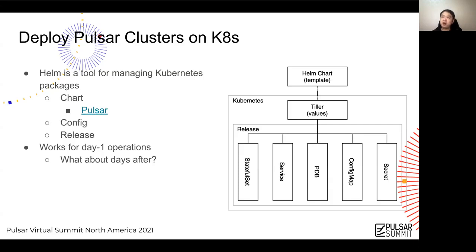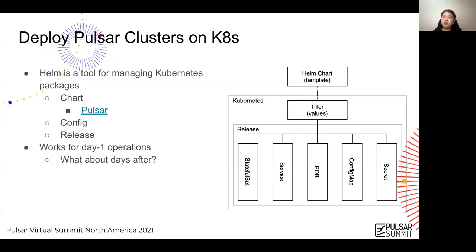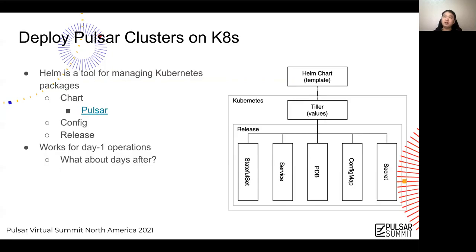Helm is widely used to deploy applications on Kubernetes. It is a tool for managing Kubernetes packages. Each package is a chart, which contains a bundle of information necessary to create an instance of a Kubernetes application, including templates for manifests, scripts, and so on. Charts are often openly available on public repositories. People could subscribe to public charts or develop their own. People often provide specific configurations that can be merged into a packaged chart to create a releasable object.